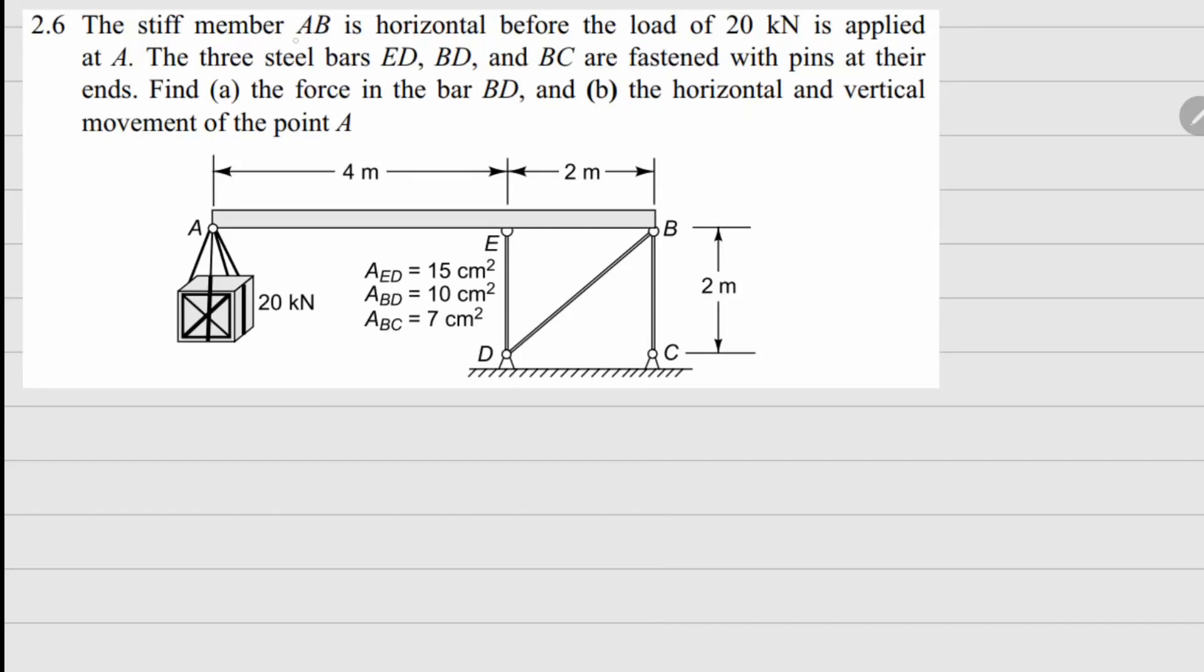This is problem 2.6 where we have a stiff member AB which is horizontal before the load. This 20 kN is applied. There are three truss members here: ED, BD, and BC. These are fastened with pins at their ends. What we need to find is the force in member BD and the horizontal and vertical movement at point A.